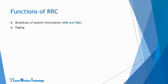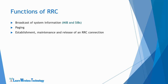Paging is used to inform the UE about an incoming call or notification. RRC connection control functions include establishment, maintenance, and release of an RRC connection between the UE and EUTRAN, which includes allocation of temporary identifiers between UE and EUTRAN and configuration of signaling radio bearers for the RRC connection.